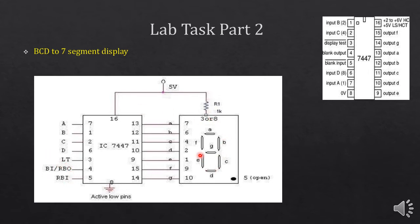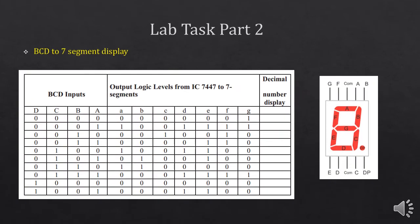Let's move on to our 7-segment display. Pin numbers 3 and 8 are the common pins of the 7-segment display. As this pin is connected with VCC, which is 5 volts, this means our 7-segment display has a common anode configuration. If you see the truth table of the 7-segment decoder IC, when you apply 0000 at the input, the output — only G will be equal to 1 while A, B, C, D, E, F will be equal to 0, as it is working on active low logic.